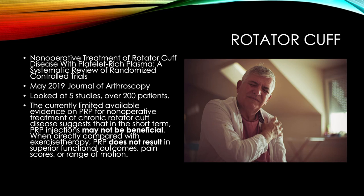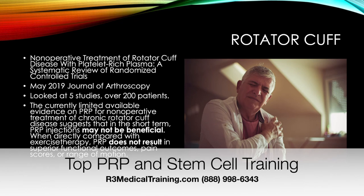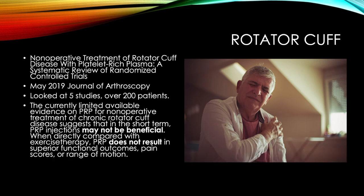For rotator cuff issues, a meta-analysis in the Journal of Arthroscopy last year pulled together five studies with over 200 patients. Meta-analyses include studies done differently, so there are limitations. With limited available evidence, using PRP for non-operative treatment of chronic rotator cuff disease may just not be beneficial. Based on these and other studies, what we recommend is PRP plus a stem cell biologic or exosome.